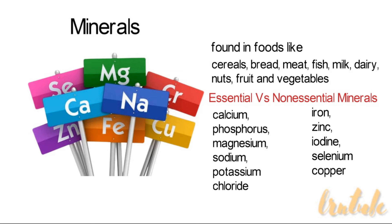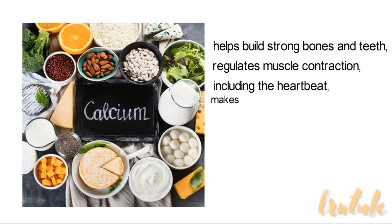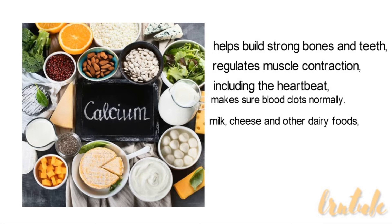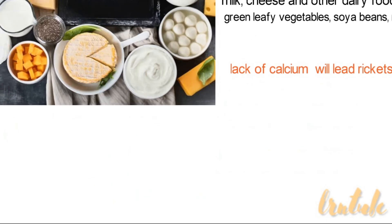Calcium helps build strong bones and teeth, it regulates muscle contraction including the heartbeat, and makes sure your blood clots normally. Good sources of calcium include milk, cheese and other dairy foods, green leafy vegetables such as broccoli, cabbage, and okra, soya beans, nuts, bread, and anything with fortified flour. If you don't get enough calcium, your bones won't develop properly, which will lead to rickets.